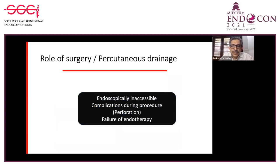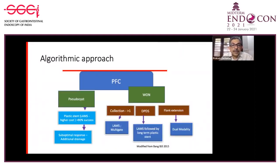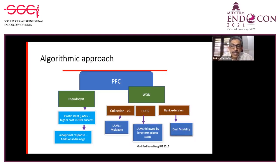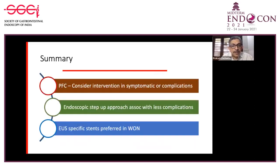Surgery or percutaneous drainage is required if the collection is inaccessible endoscopically, if there are complications during the procedure, or if there is failure of endotherapy. To summarize algorithmically: in pancreatic fluid collection—either pseudocyst or walled-off necrosis—a plastic stent suffices for pseudocyst. For walled-off necrosis, depending on the collection, pancreatic disconnection, or flank extension, a dual modality may be required and LAMS is preferred. Endoscopic step-up approach is associated with fewer complications; EUS-specific stents are preferred especially in walled-off necrosis.